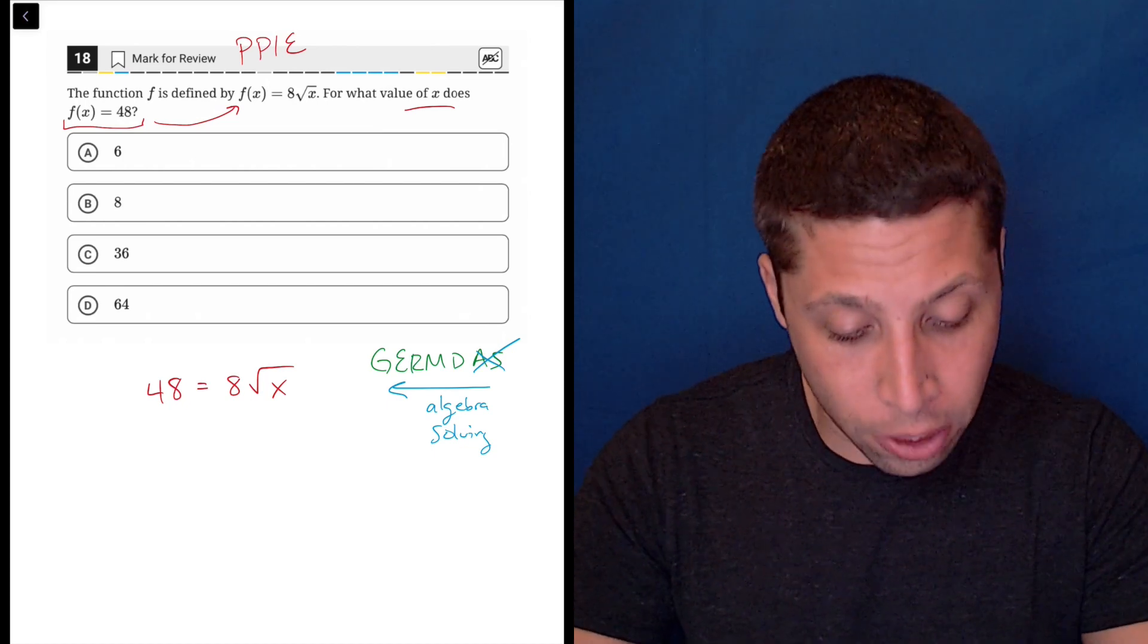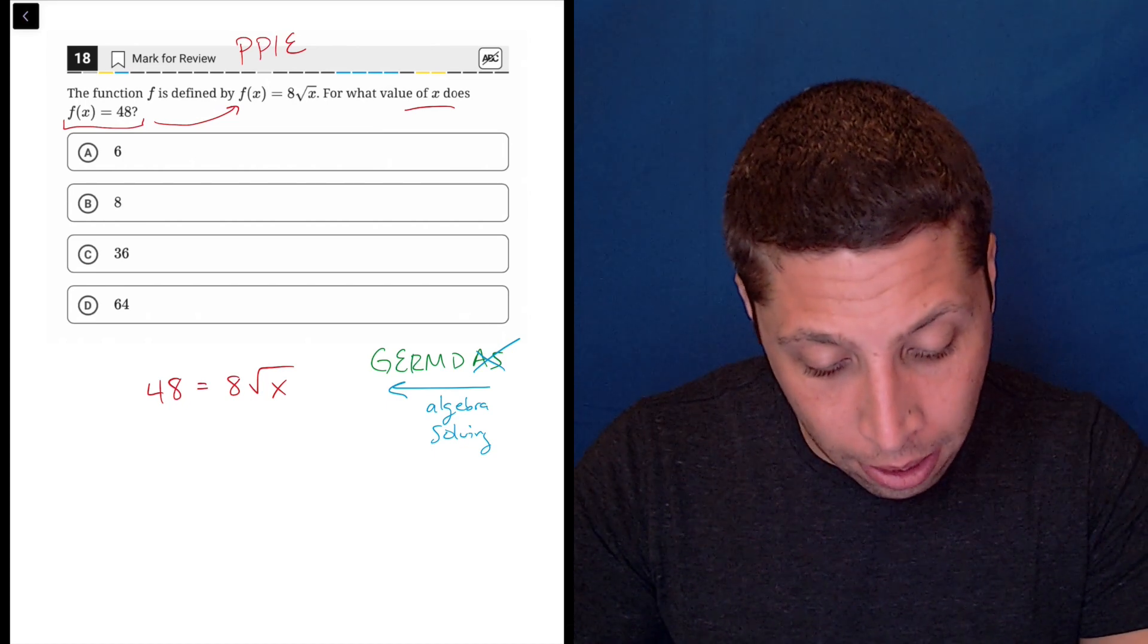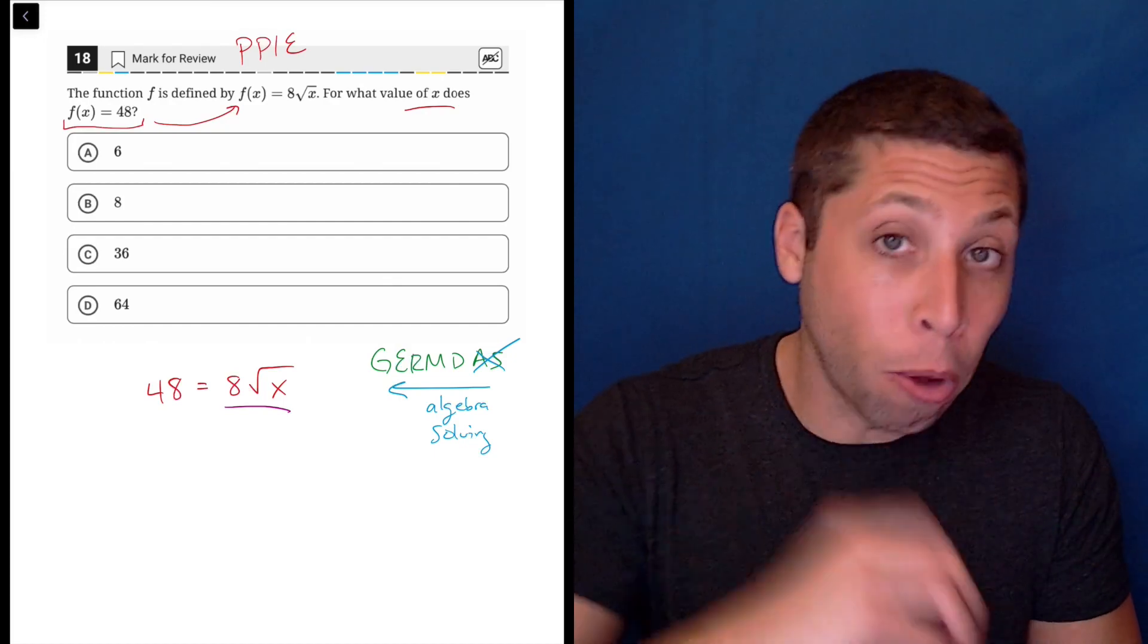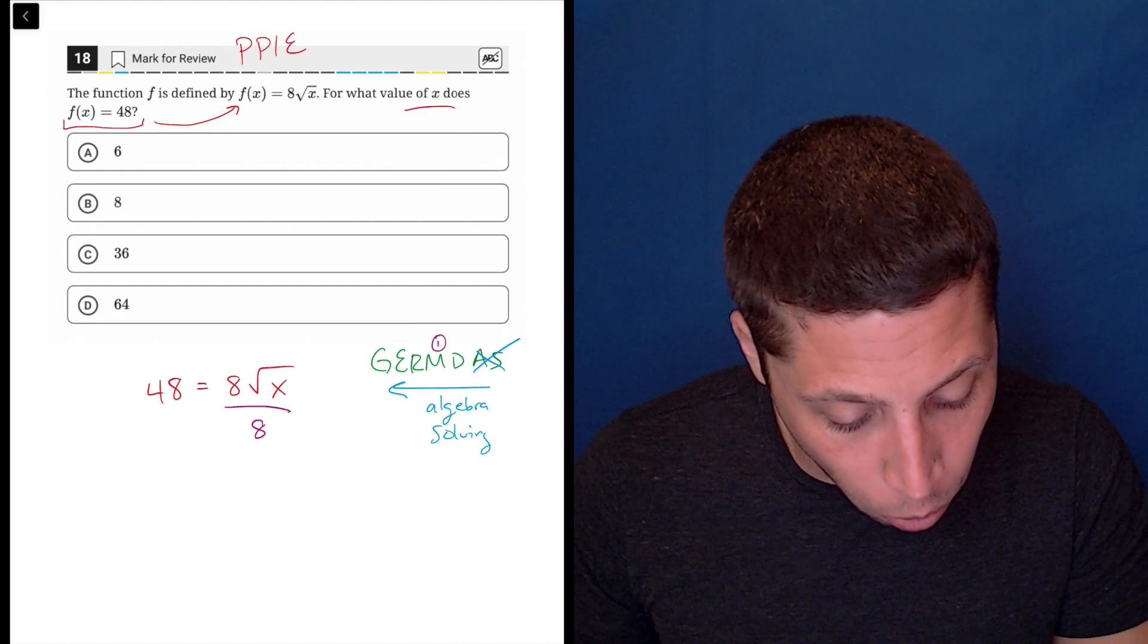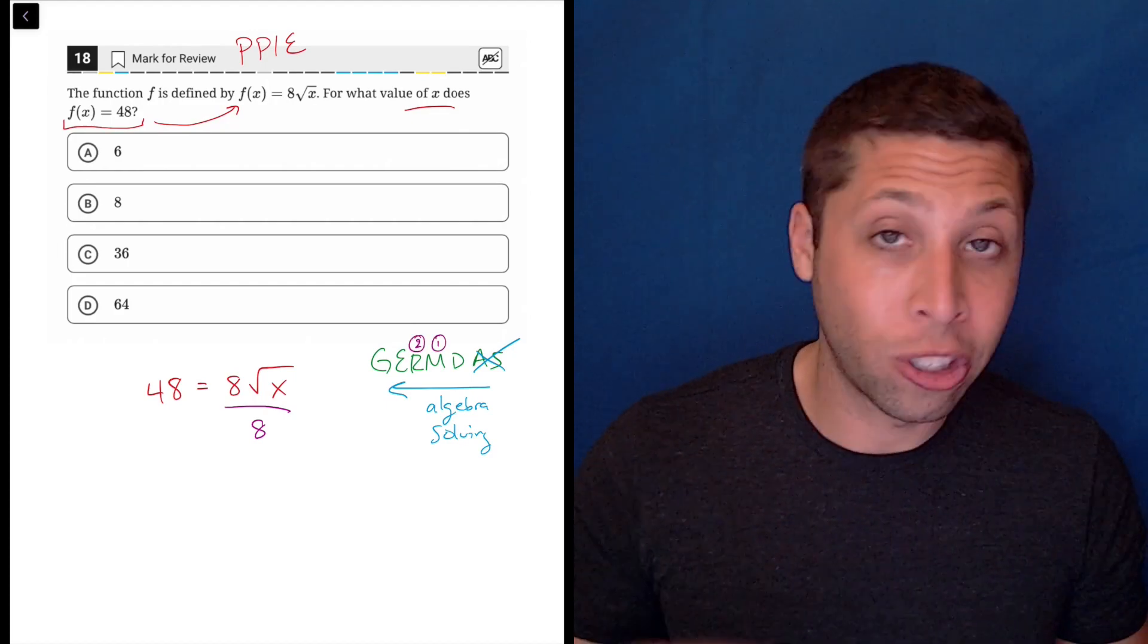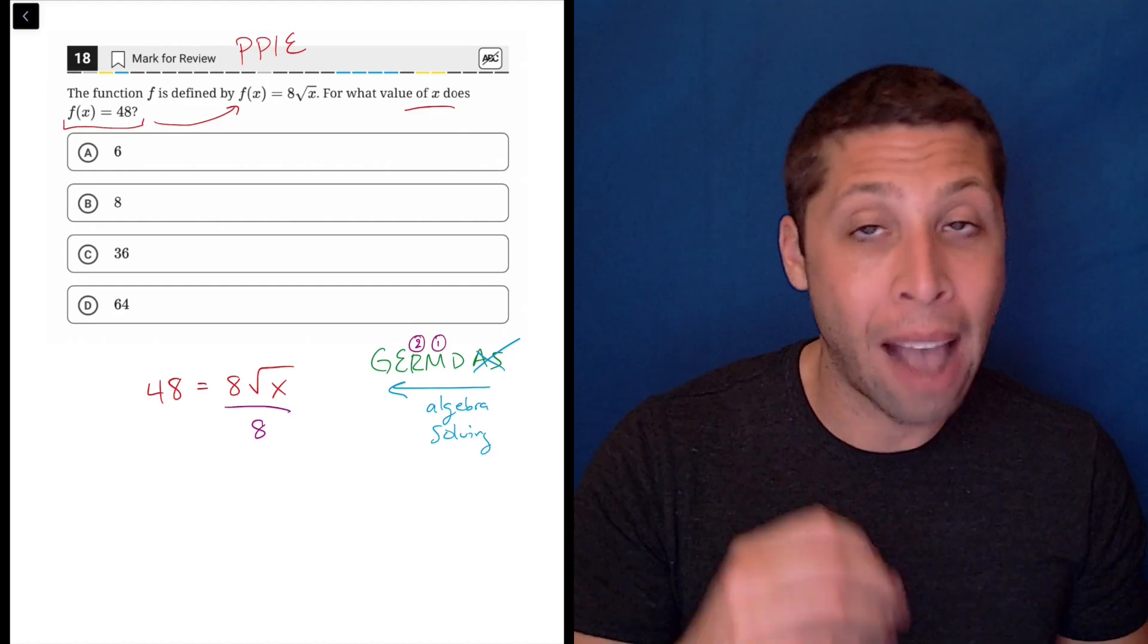But we do have multiplication or division. We have this 8 that is being multiplied by the square root of x. And we know we have to deal with that multiplication before we deal with the r, which stands for the radical. So we have to deal with that first.